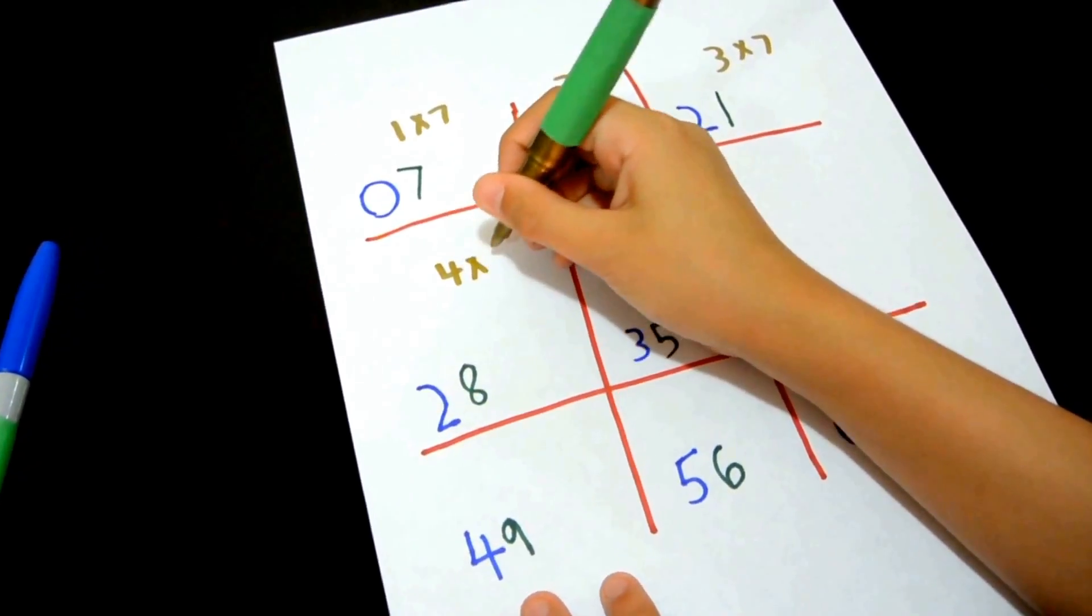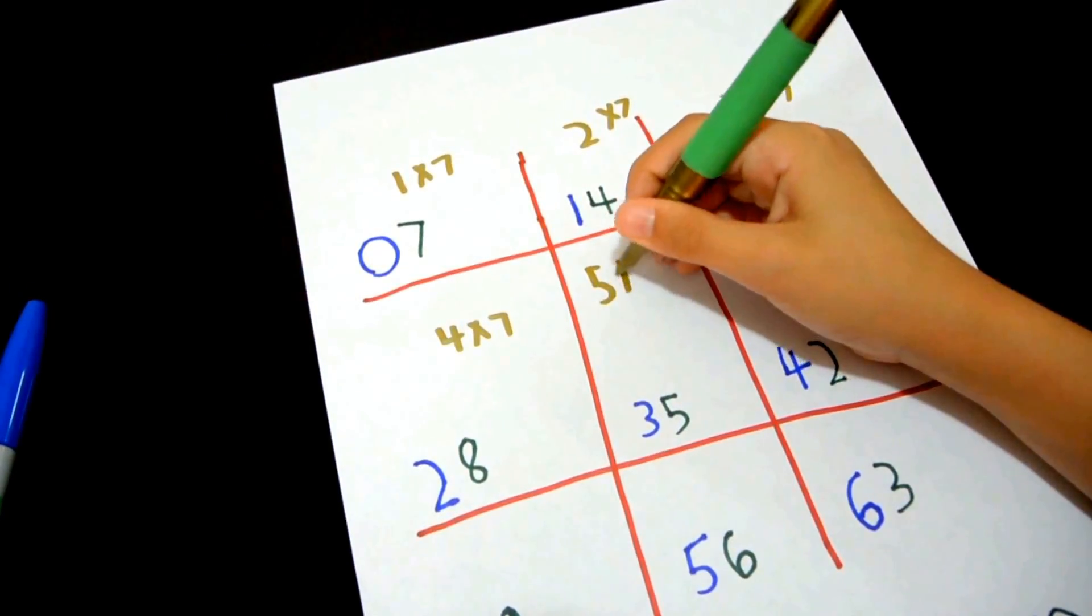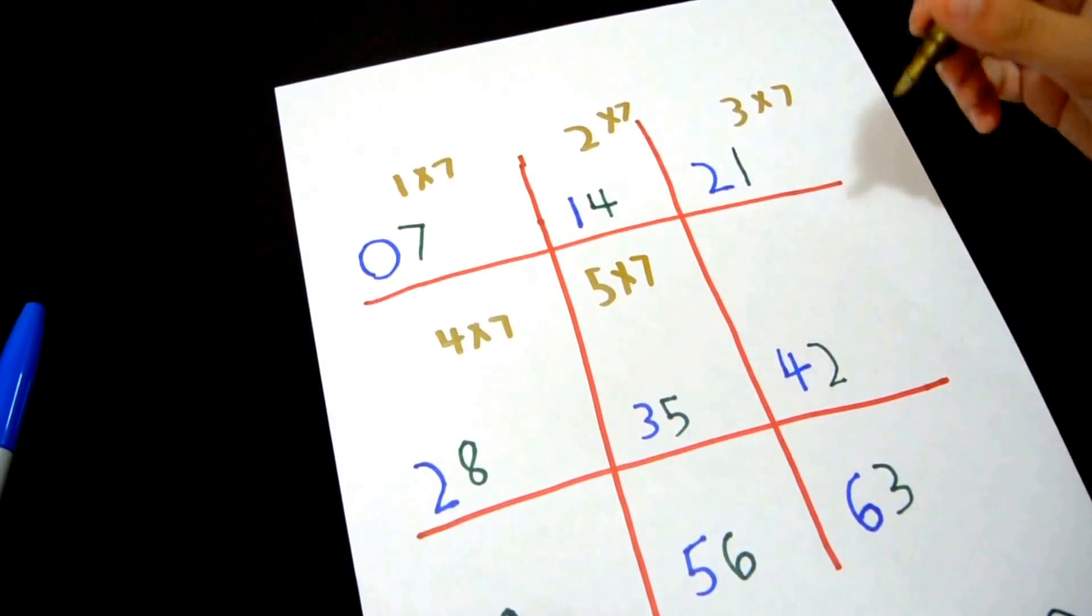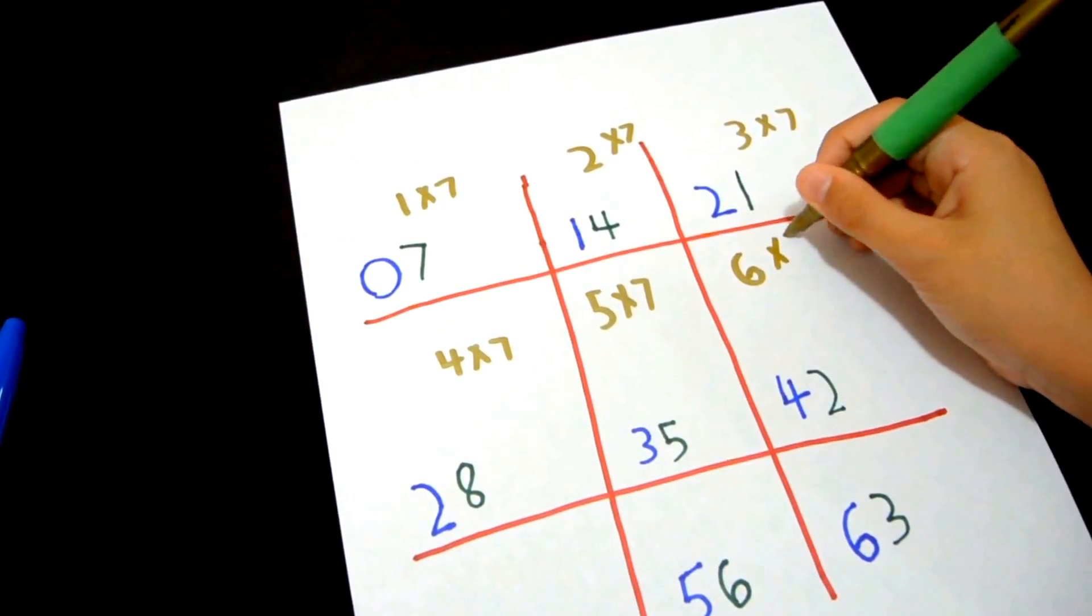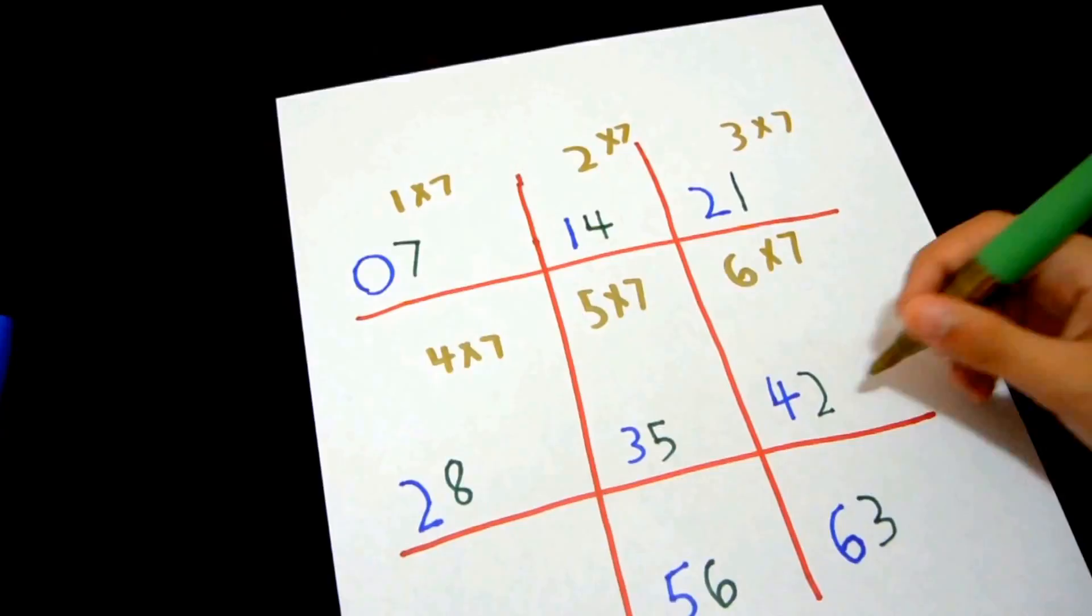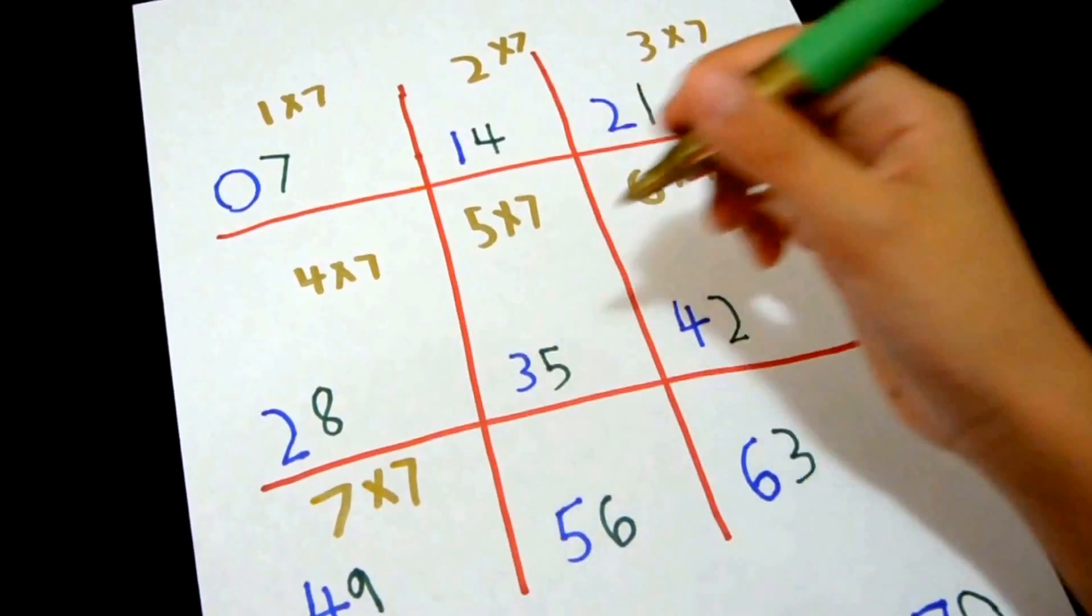4 times 7 is 28. 5 times 7 is 35. 6 times 7 is 45. 7 times 7 is 49.